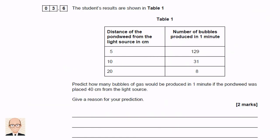Here, the student has produced a table of results. We are asked to predict the number of bubbles seen in one minute when the distance is increased to 40 cm, giving a reason. 40 cm is twice 20 cm, so the rate of photosynthesis at 40 cm distance should be quarter of that of 20 cm, so 2 bubbles would be produced, because 2 is a quarter of 8. And at this distance, the light intensity would be very low.